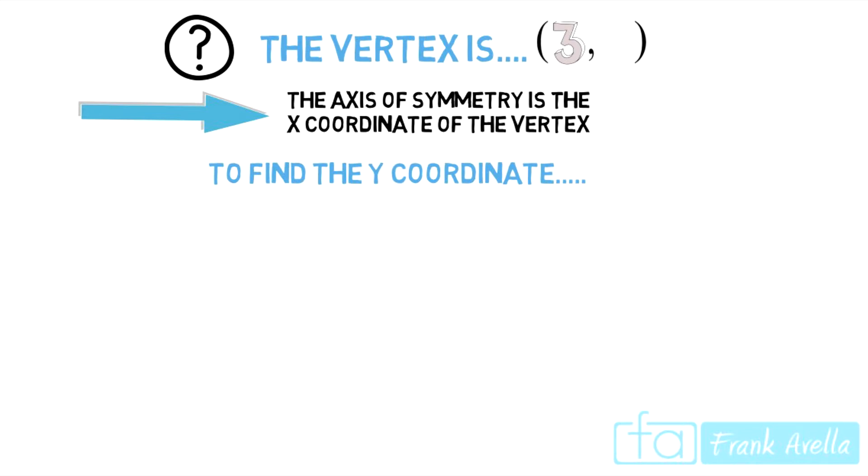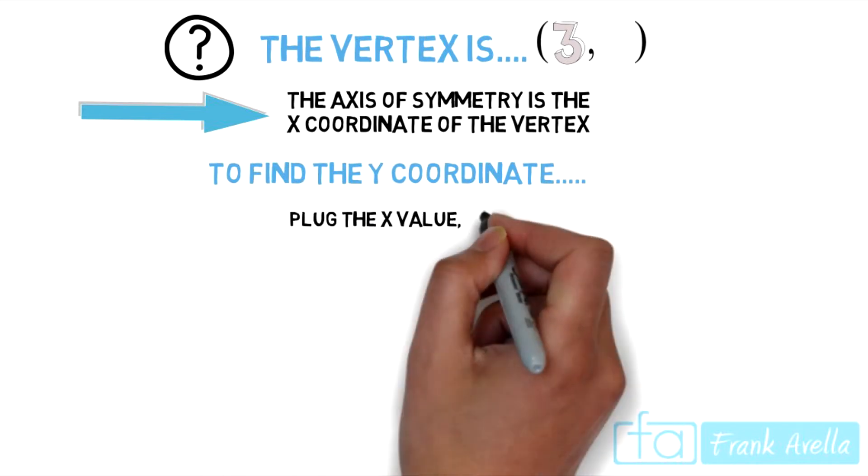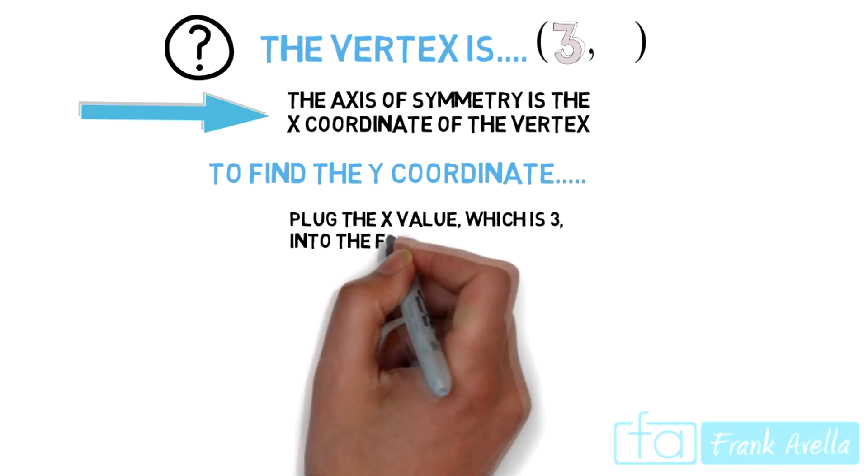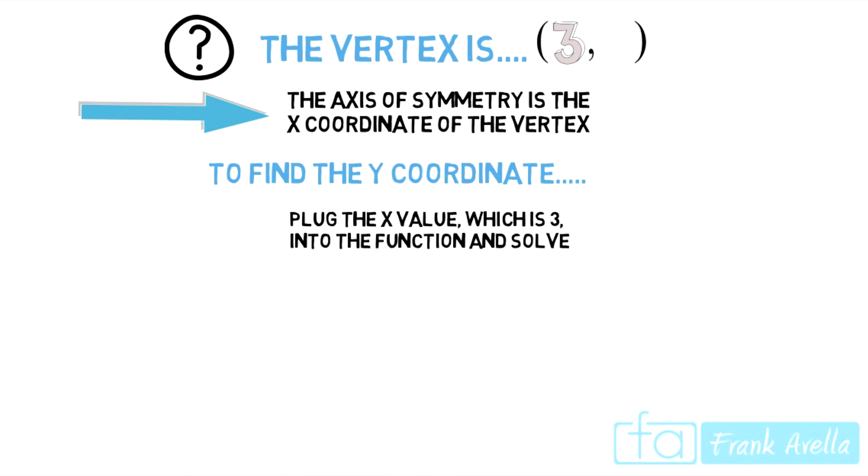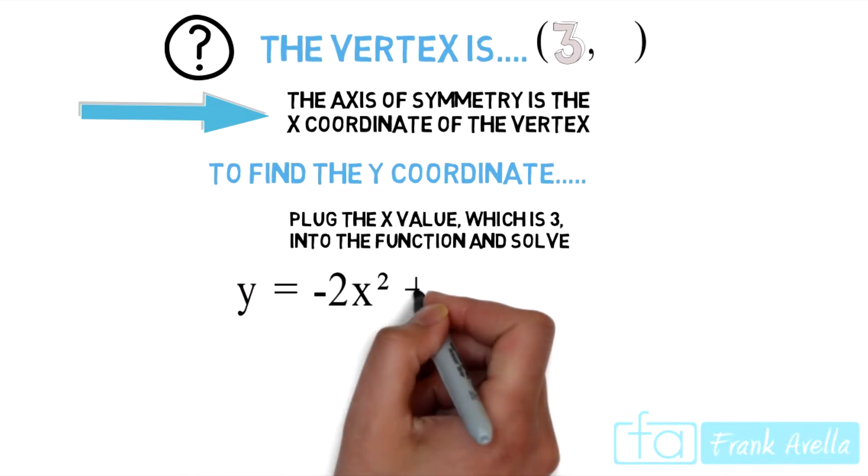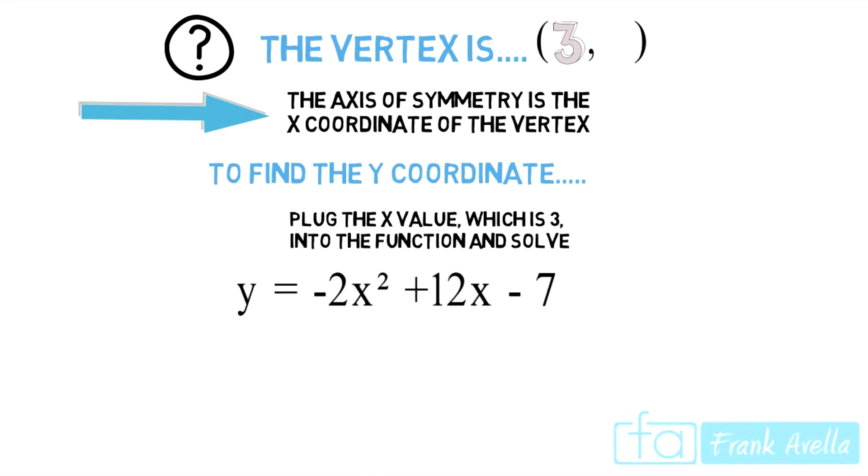Now to find the y coordinate, plug the value x, which is 3, into the function and solve. Again, our function was y equals negative 2x squared plus 12x minus 7.